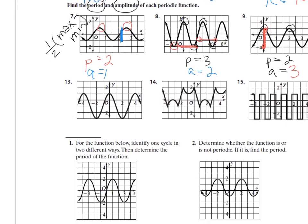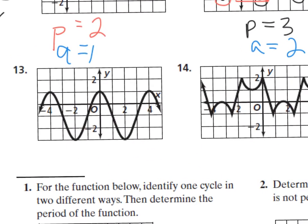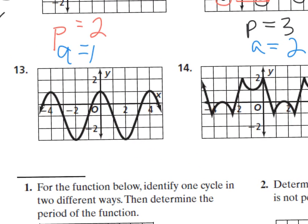For number thirteen, the period measured from here to here is four. The height of the wave is going from one to three — wait, the height is four — so the amplitude is half of four, which is two.